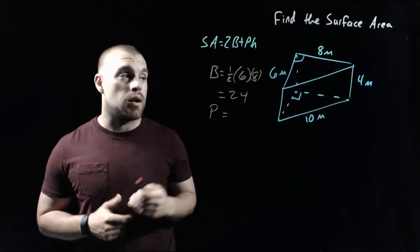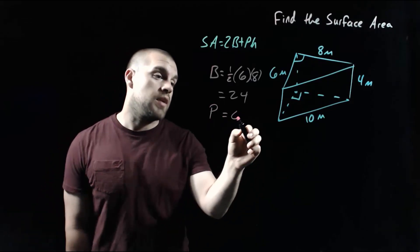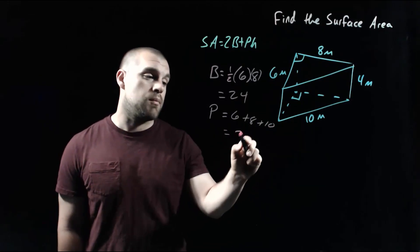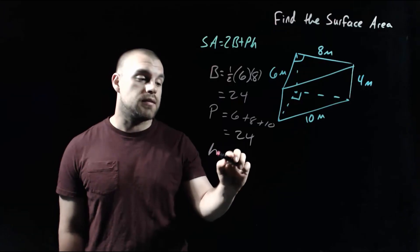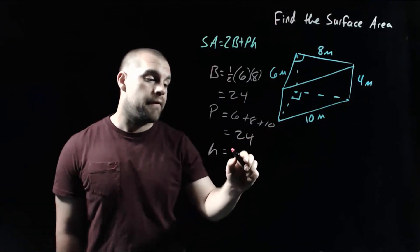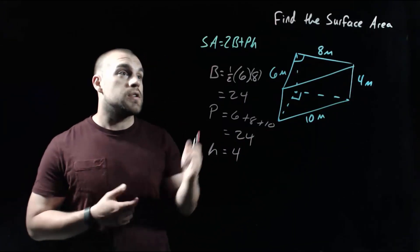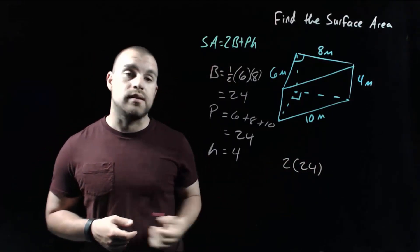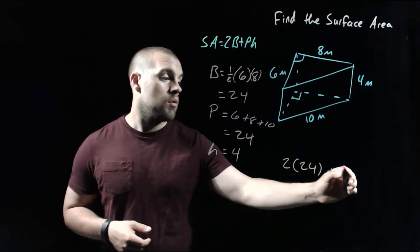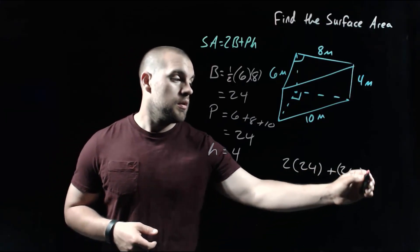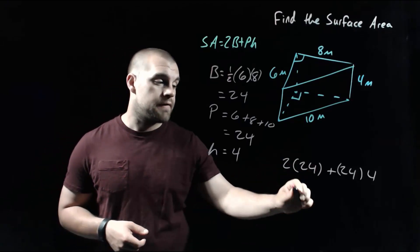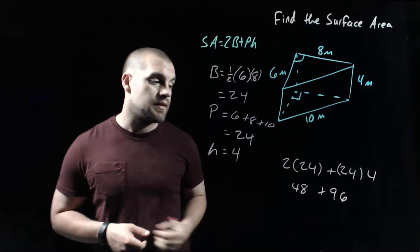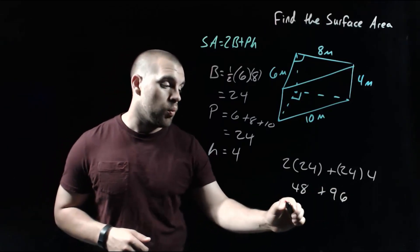When we're finding the perimeter of the triangle, we add up all the sides: 6 plus 8 plus 10. Six plus 8 is 14, plus 10 more is 24. Then we need the height of our prism, which is the 4 length on the outside. Plugging these values into our formula, we've got 2 times the area of the base of 24, plus the perimeter of 24 times 4. Two times 24 is 48, and 4 times 24 is 96. Adding those together, we get 144.